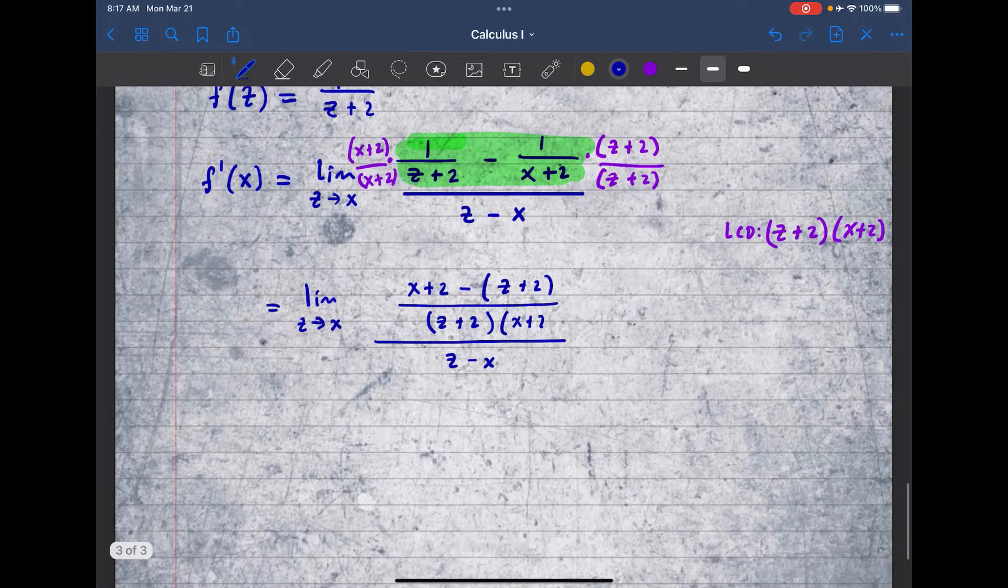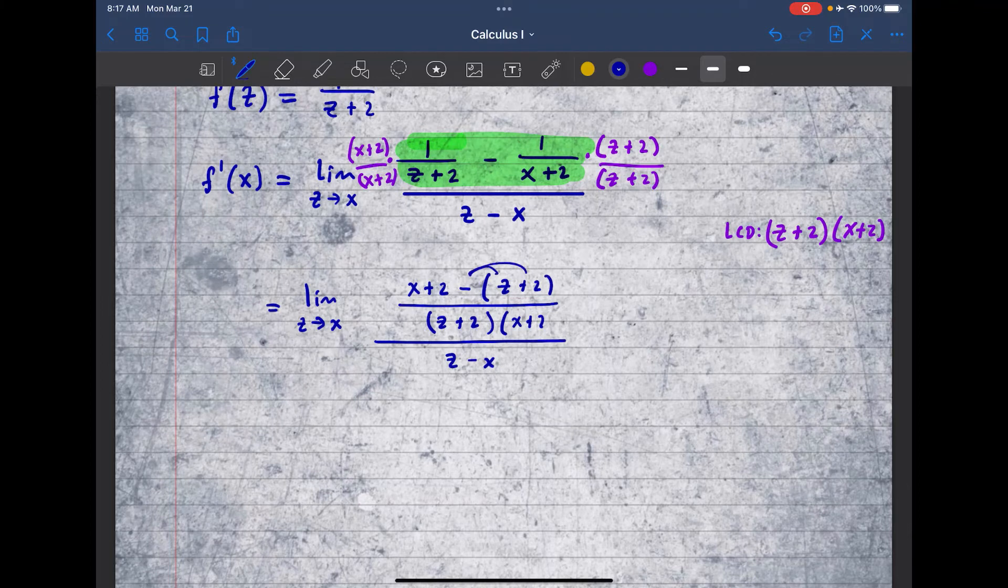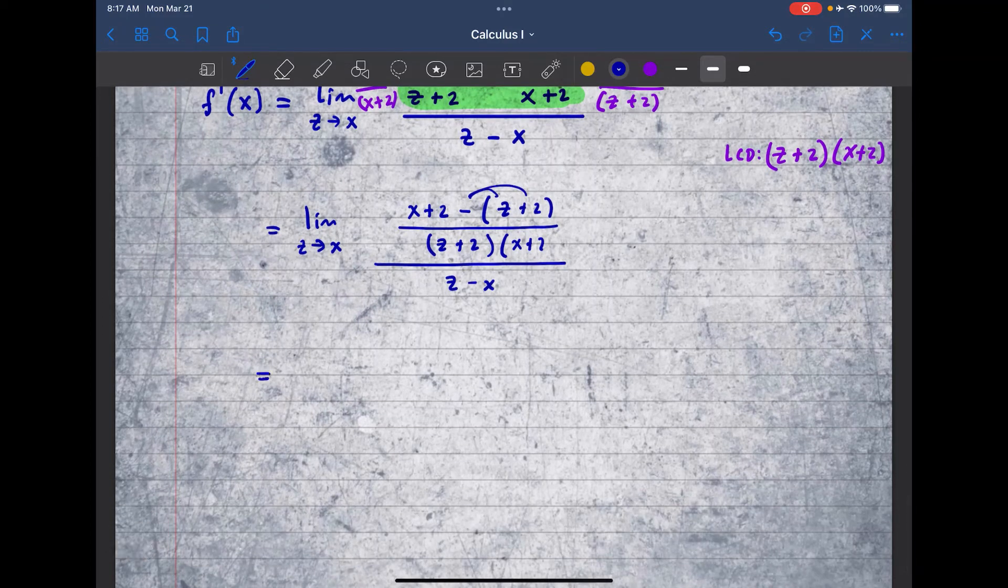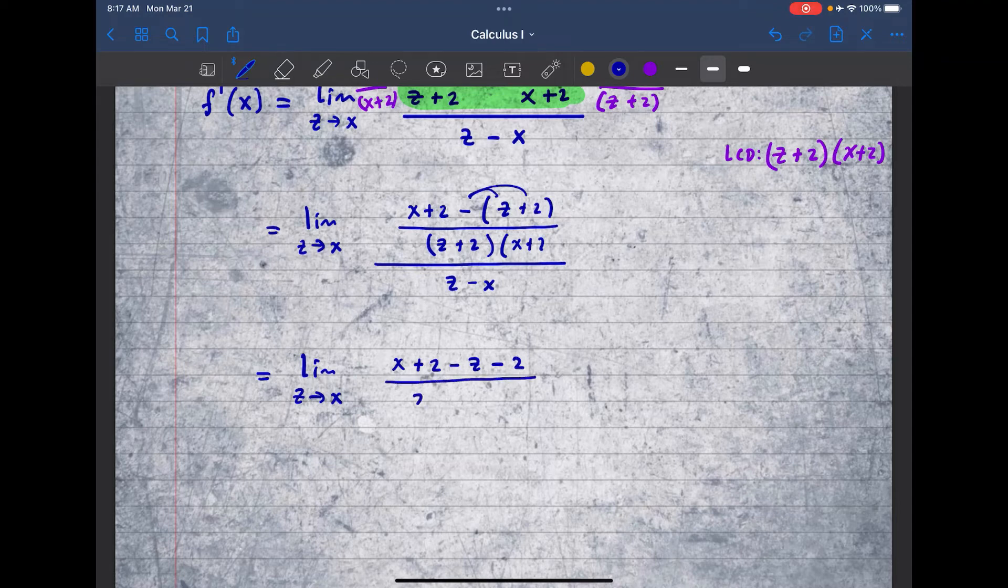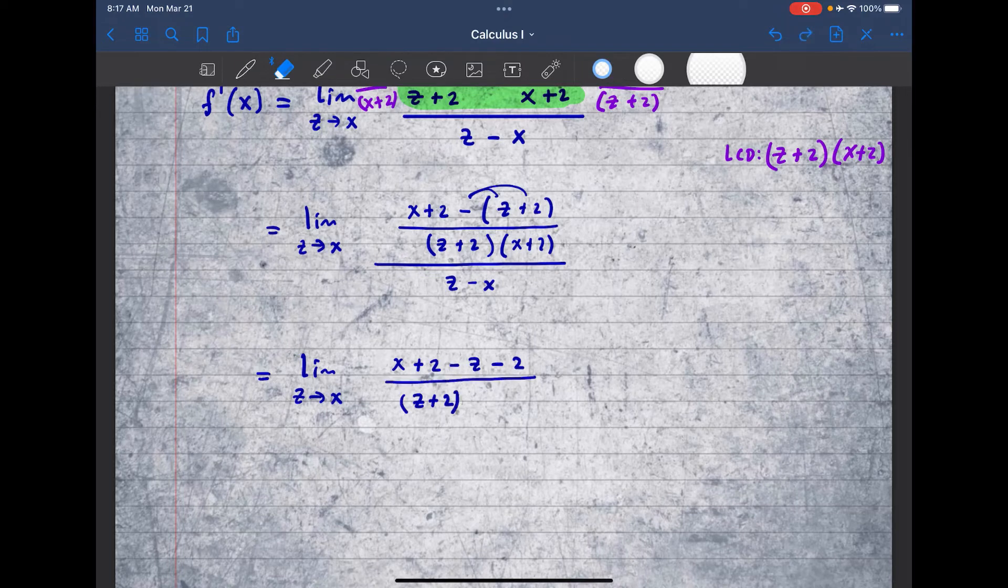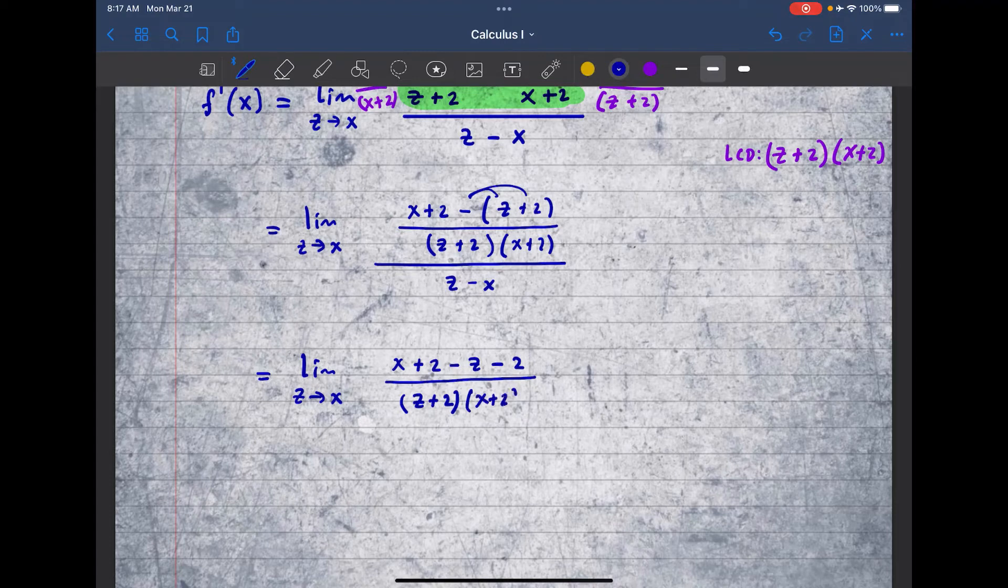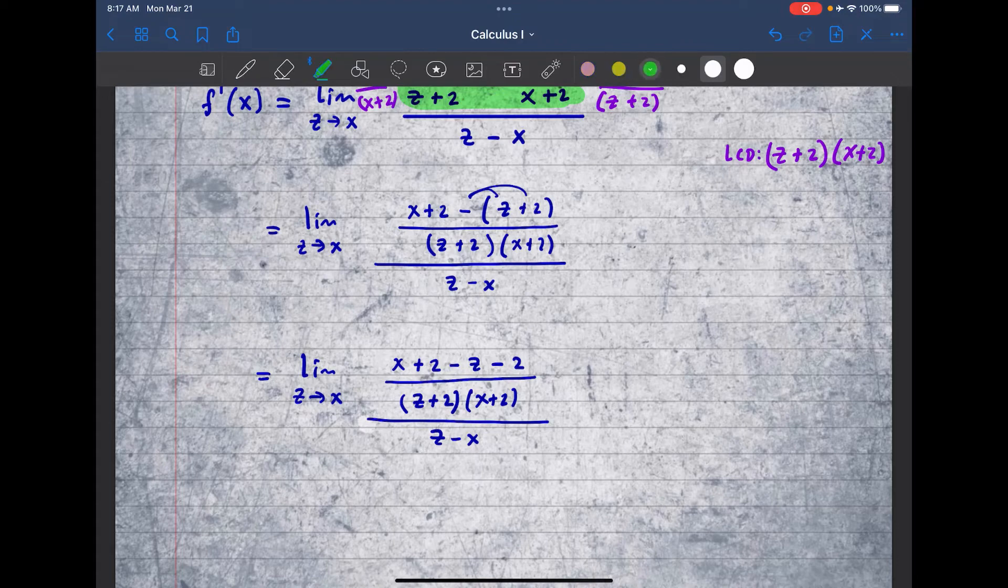And now on top, if you distribute the negative out, you will get the following. So keep writing the limit as z approaches x, we have x plus 2 minus z minus 2 all over z plus 2, x plus 2 all over z minus x. And now I can clearly cancel out plus 2 and minus 2.